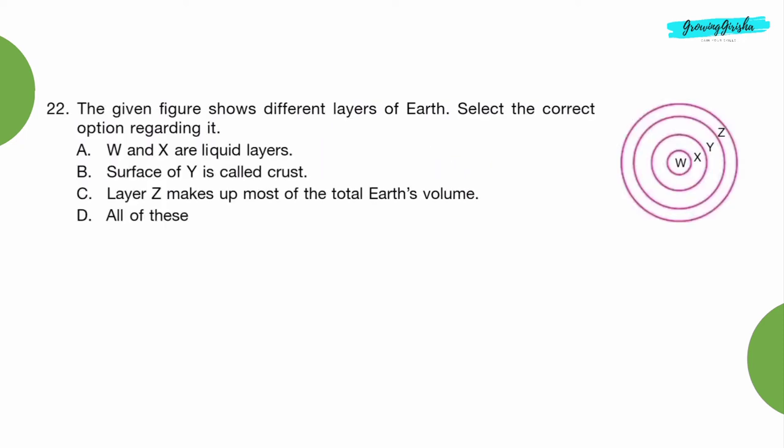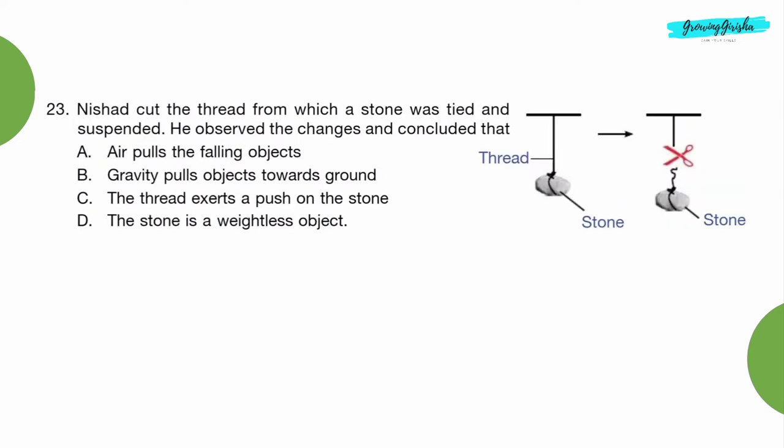Question 22: The given figure shows different layers of earth. Select the correct option regarding it. Option B: The surface of Y is called crust. Question 23: Nishad cut the thread from which a stone was tied and suspended. He observed the changes and concluded that. Option B: Gravity pulls objects towards ground.